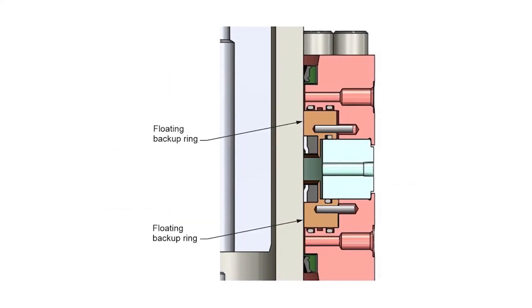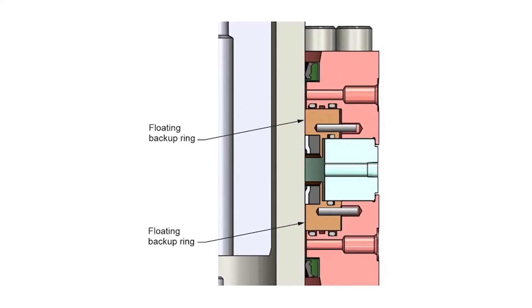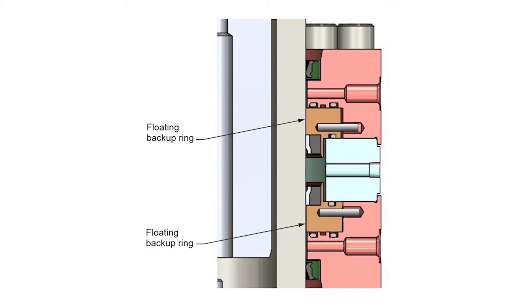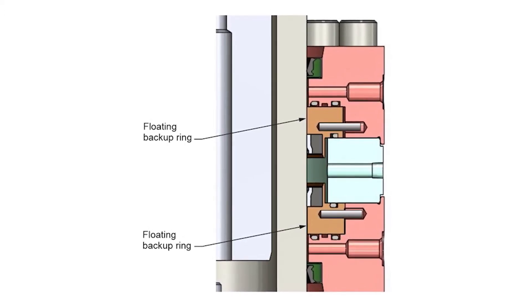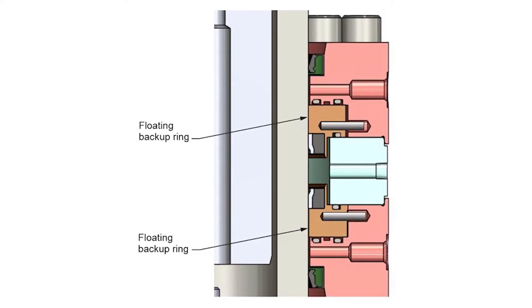The test seals were mounted in our patented floating backup rings. These rings move laterally to accommodate shaft misalignment and run-out. They allow the use of a very small extrusion gap clearance, facilitating high-pressure seal performance.